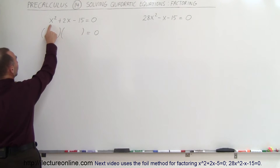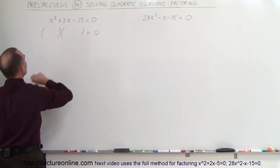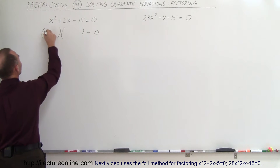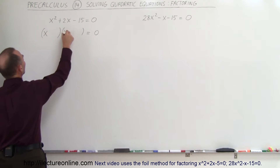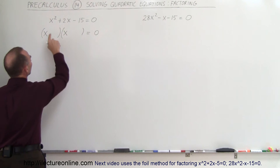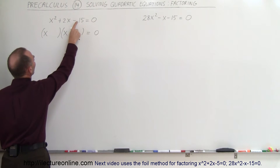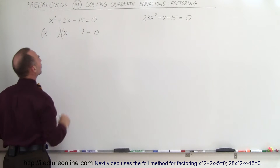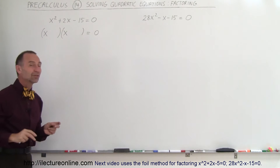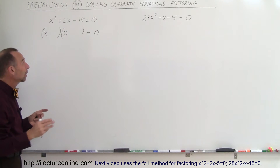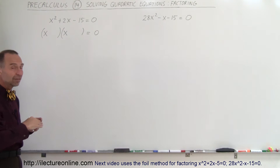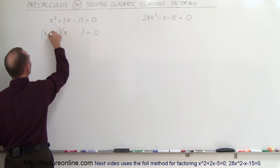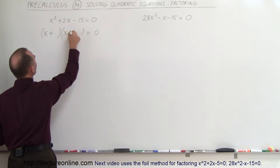Notice that the first term is an x squared. That means you're going to need an x and an x here. Now you look at the signs. The last sign is negative and the middle sign is positive, so it means that one must be positive and one must be negative. So we need a plus and a minus.